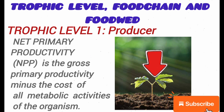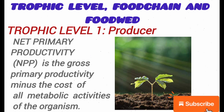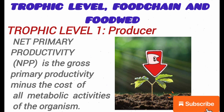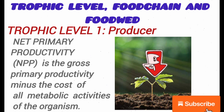Some of the energy or food produced by a plant is used by that same plant to carry out metabolic activities — such as withstanding the force of wind, carrying out excretion, and transporting food. After using up some of this energy, the remainder is regarded as net primary productivity. So the total amount of energy produced by the plant minus the amount used for day-to-day activities is called net primary productivity.